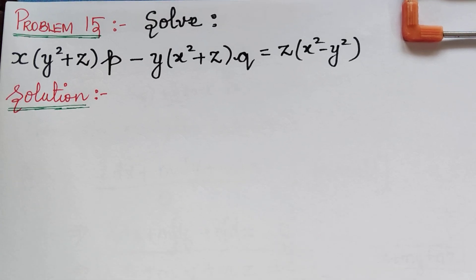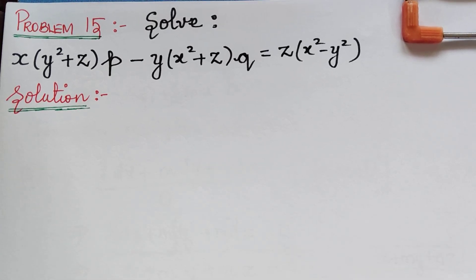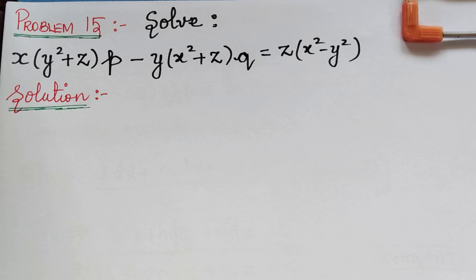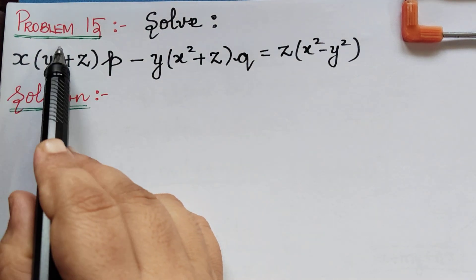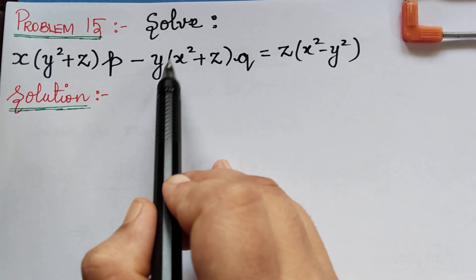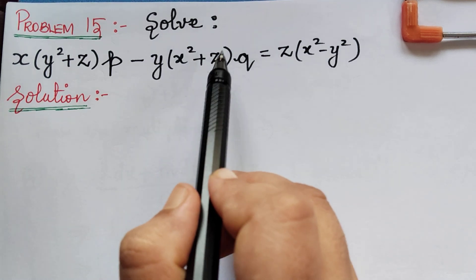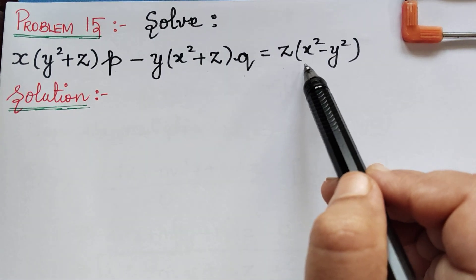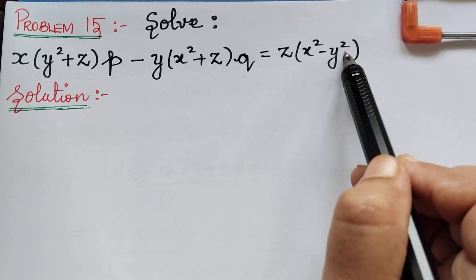Dear students, we are solving problems under the topic Lagrange's linear partial differential equations using the method of multipliers. Here we have problem 15 which says: solve x(y² + z)p − y(x² + z)q = z(x² − y²).